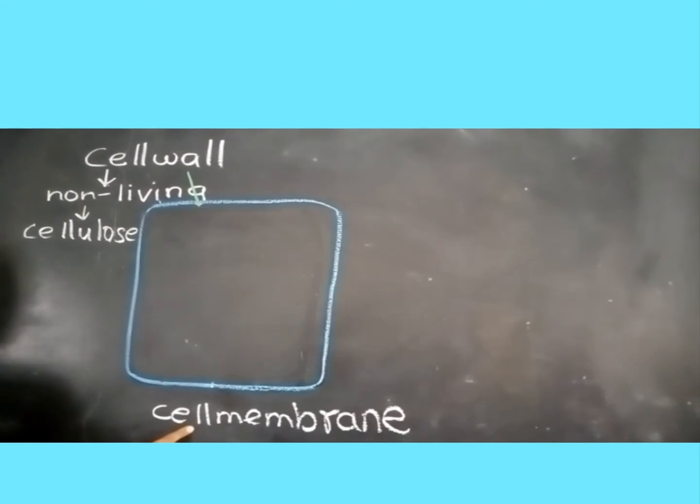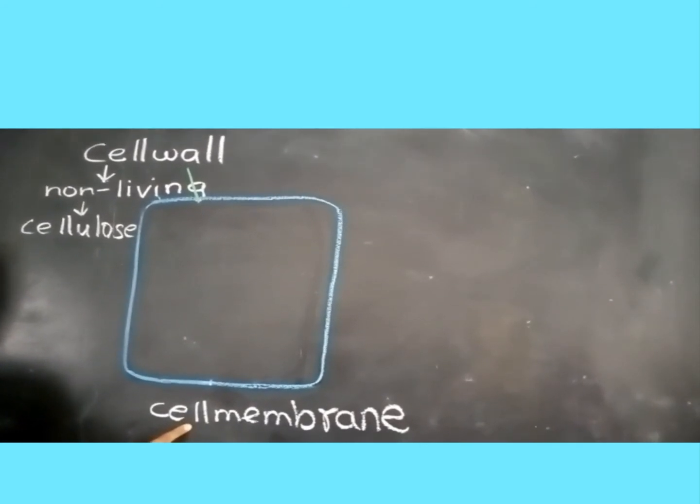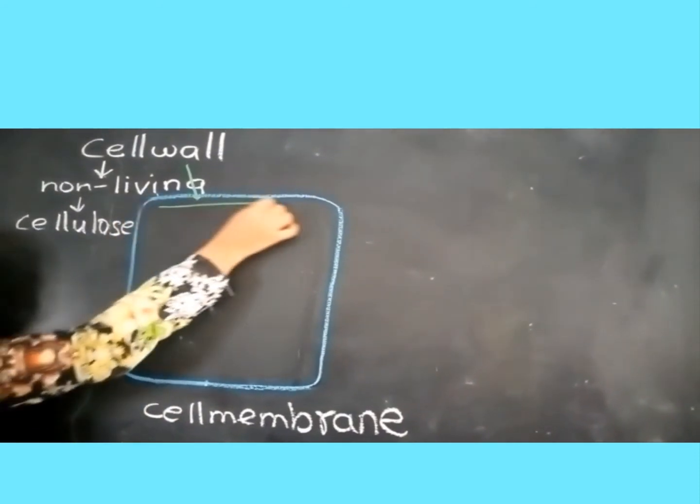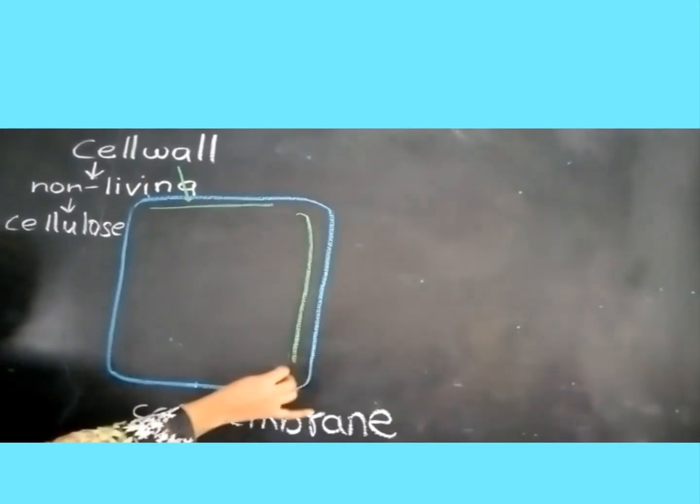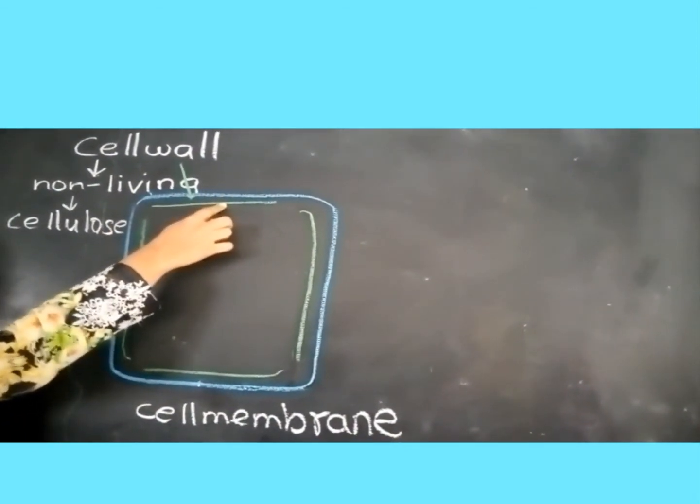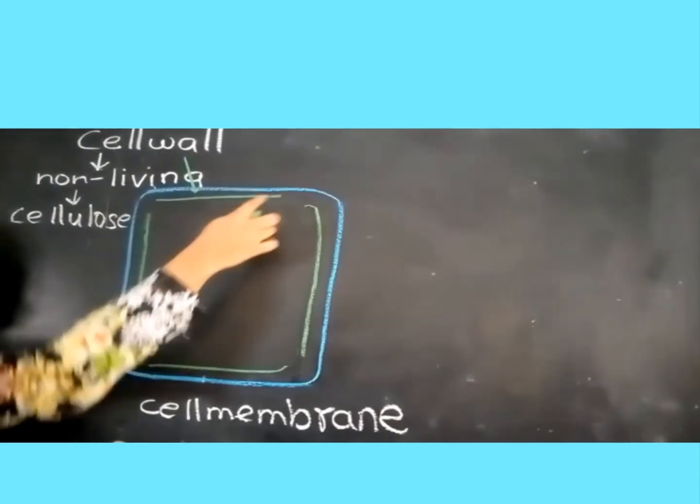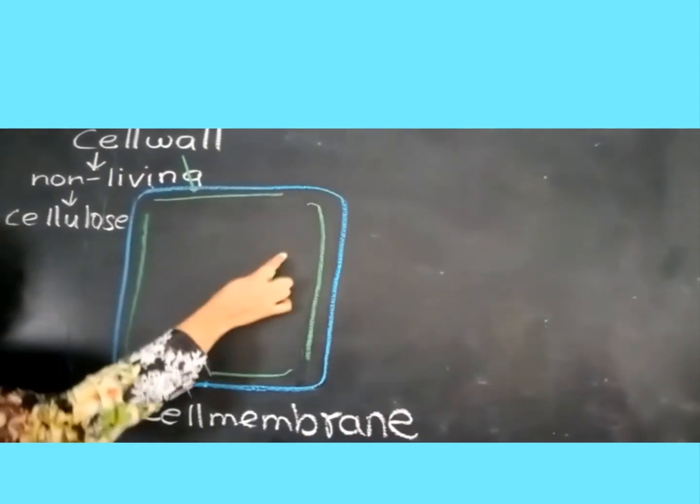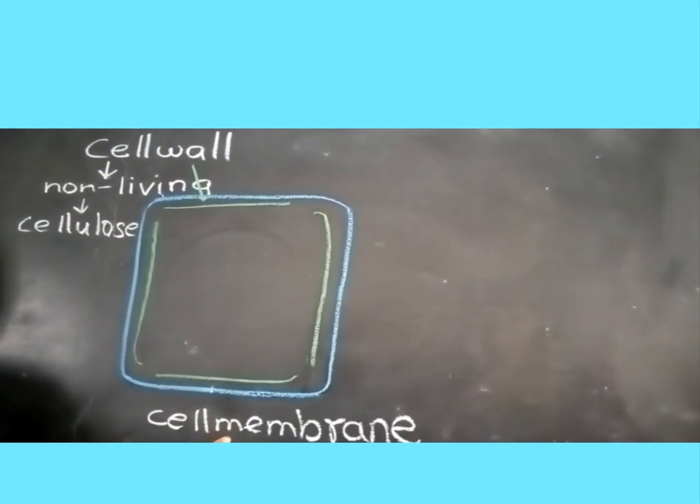Now we will discuss the cell membrane. The cell membrane is the outermost layer in the animal cell and in the plant cell it is present inside the cell wall. It is a semi-permeable membrane which allows certain substances to move in and out of the cell. It also protects the internal structure of the cell. The cell membrane is also known as the plasma membrane.